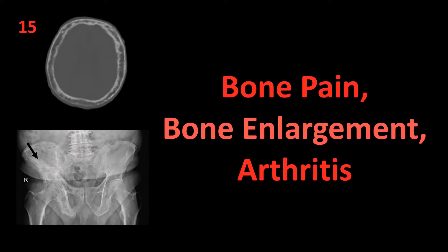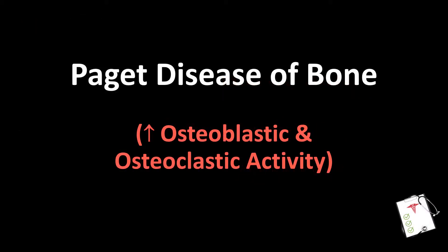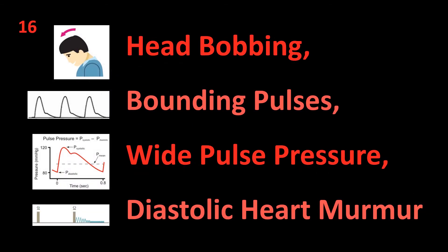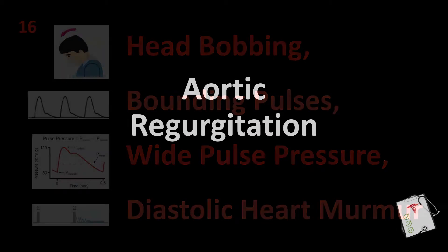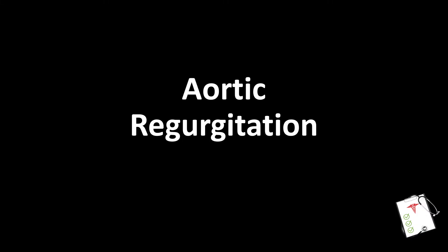Number 15: Bone pain, bone enlargement, arthritis. Answer: Paget disease of bone — increased osteoblastic and osteoclastic activity. Number 16: Head bobbing, bounding pulses, wide pulse pressure, diastolic heart murmur. Answer: Aortic regurgitation.